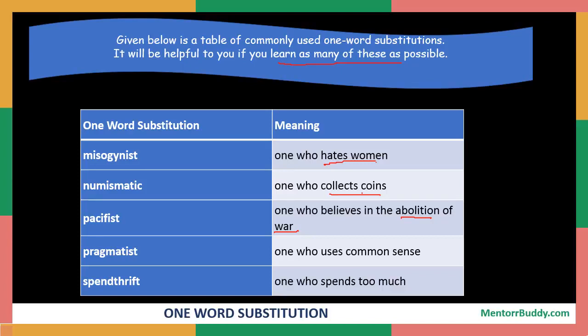Then we have 'pragmatist' — pragmatist is one who uses common sense. Then 'spendthrift', which is the antonym of miser, means one who spends too much. In these kinds of questions, generally the meaning is given as the question and you have to identify from the options what is the correct one word substitution for the given meaning.